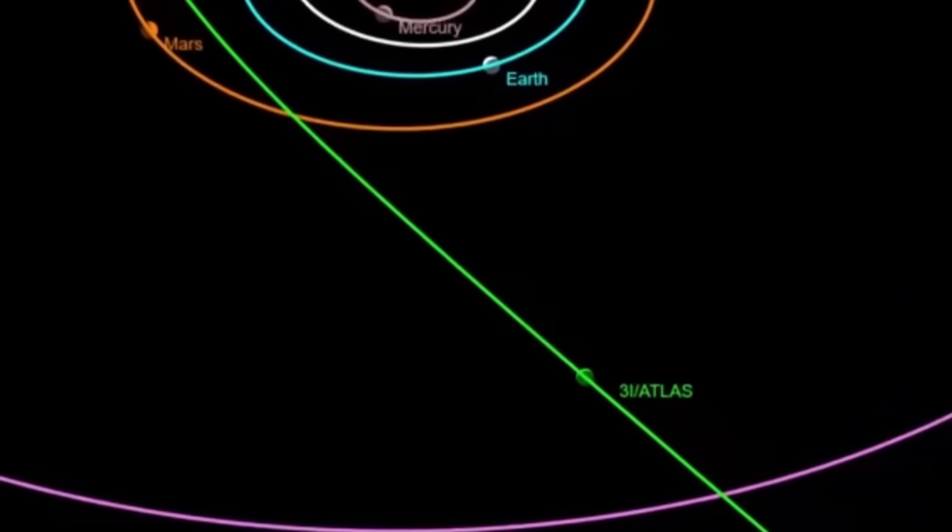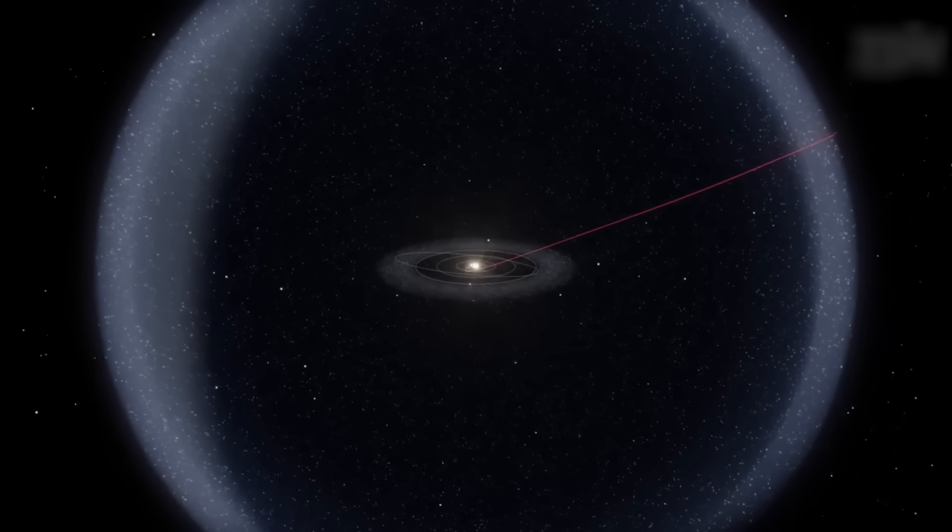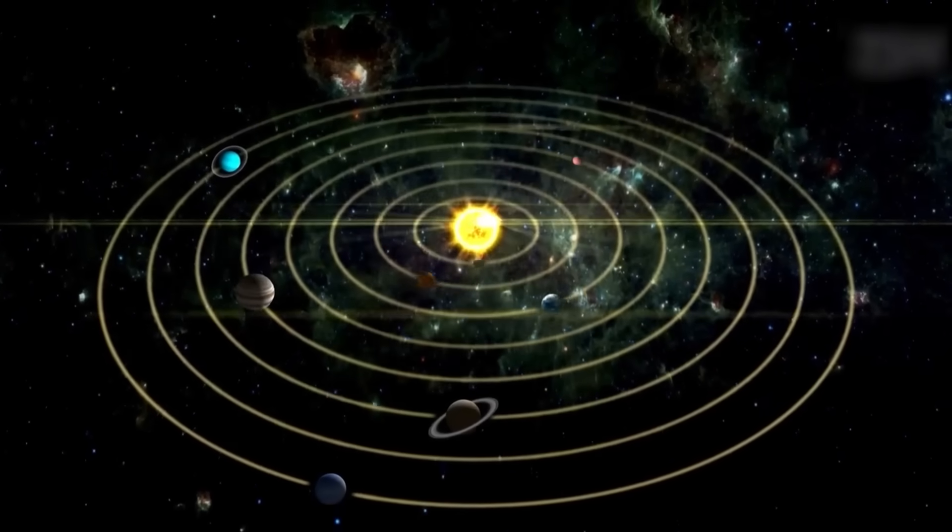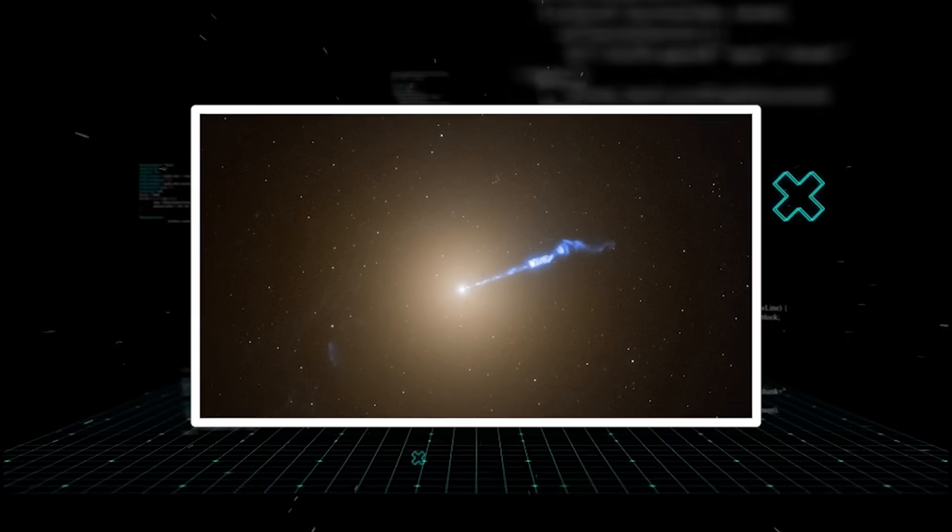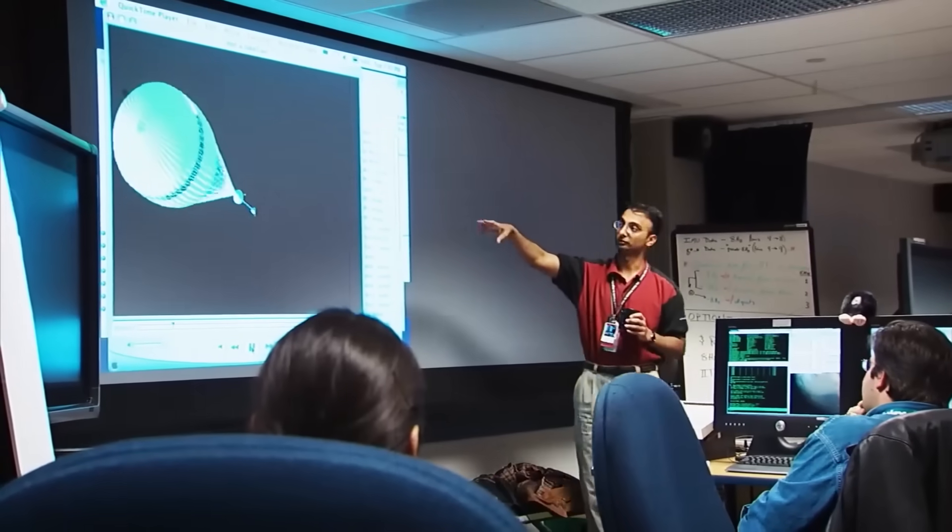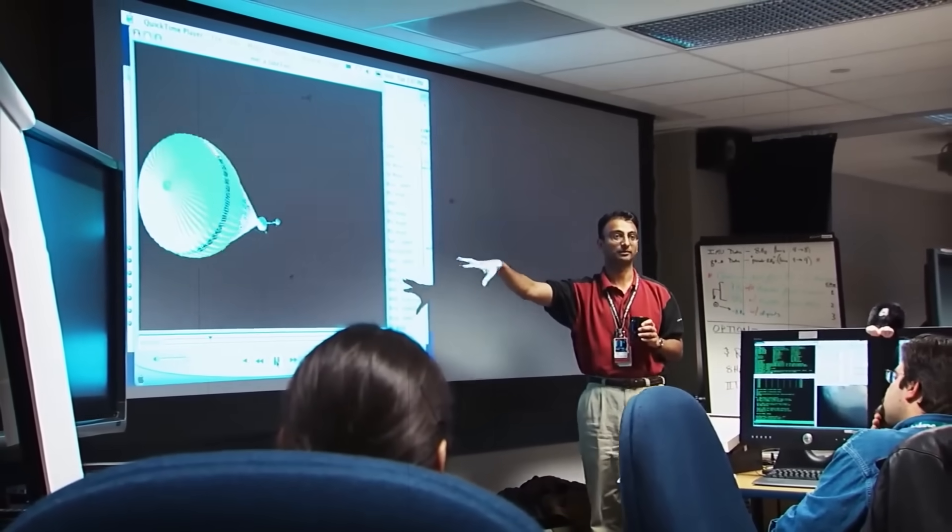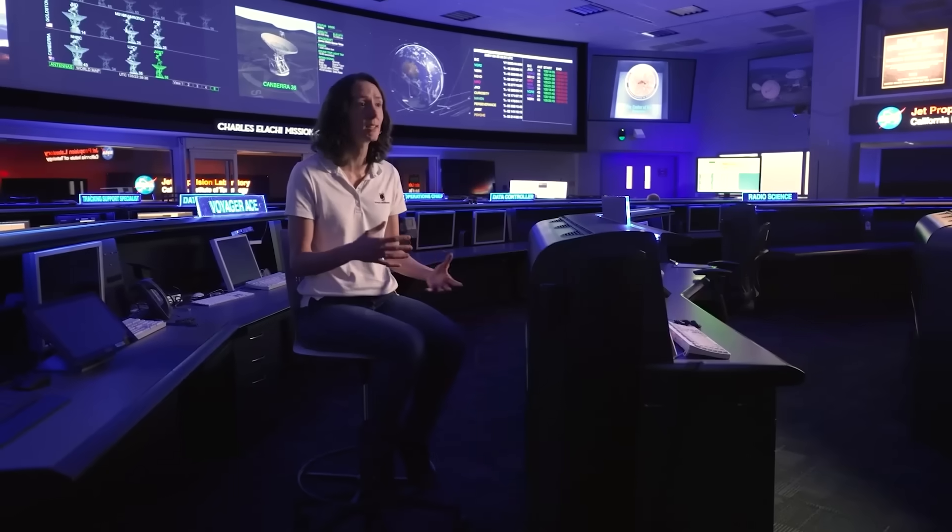This thing wasn't just passing through. It was taking the scenic route. From the moment it was spotted, 3I Atlas was screaming that it was something new, something that didn't fit into our neat little boxes of what an interstellar object should be. The initial reports were cautious, using scientific jargon to downplay the strangeness. But behind the scenes, the panic was real. How could a comet's tail act like an engine? What force could be so powerful and so controlled as to create a sunward plume? This was more than just an oddity. It was a direct challenge to our understanding of the universe. The comet was a puzzle box, and with every passing day, it only presented more locks, with no keys in sight.